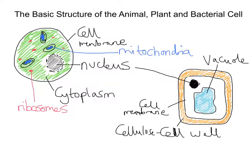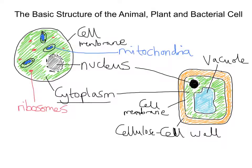Now we do still have — and I'll colour it in green as I did before — this region round the outside. That is, once again, cytoplasm. So cytoplasm is present in both cells. And there are also ribosomes too, though I won't label these a second time. And again, there are mitochondria, which the animal cell also has.